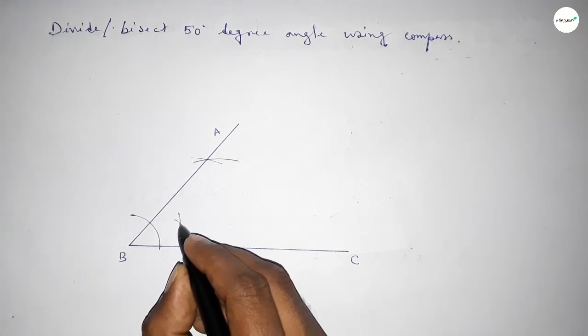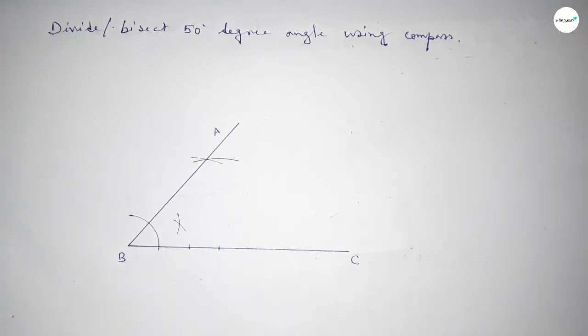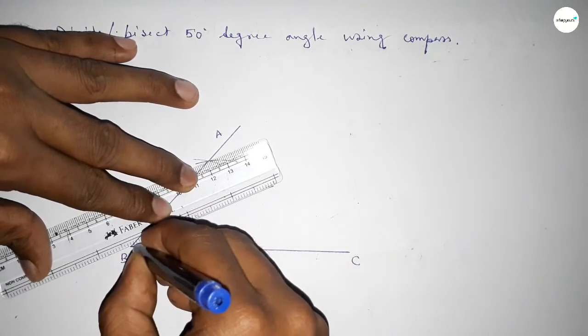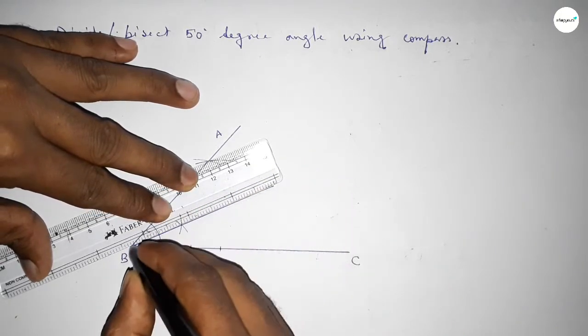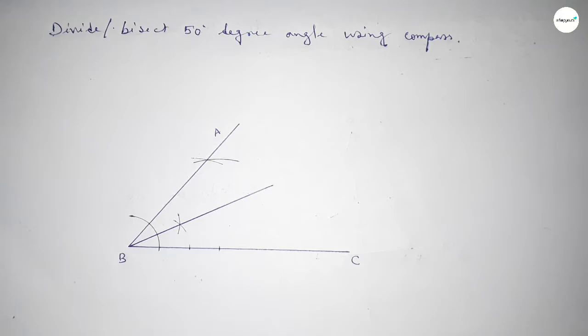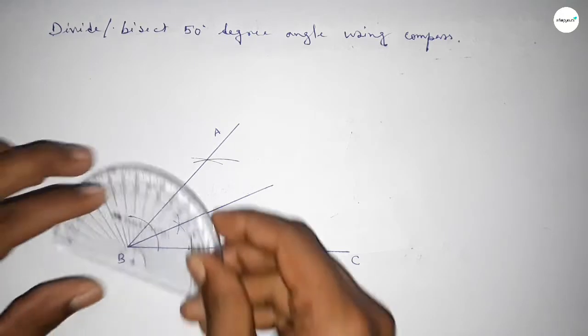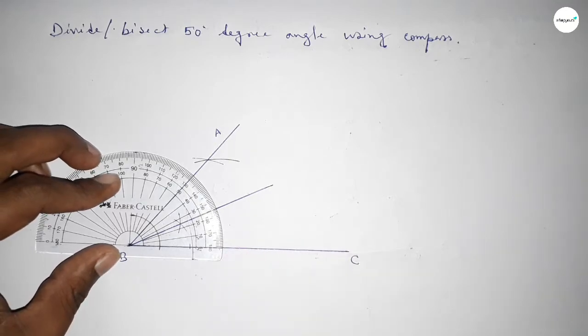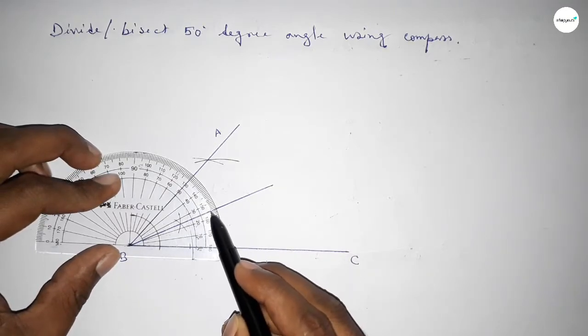Next, we join this line to bisect the angle. Now checking whether the angles are correct. This is 0, 10, 20, and 25. This is a perfect bisection, and this is a 25-degree angle, and this is a 25-degree angle.